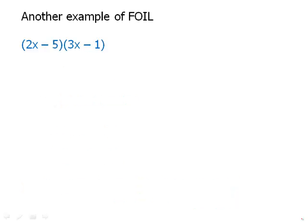Here's another example of FOILing. So again, two binomials, this time involving subtraction. So the first would be 2x times 3x. That would be 6x². The outer would be 2x times negative 1. We have to remember to include the negative. So that would be negative 2x. Then negative 5 times 3x. That would be the inner. That would give us negative 15x.